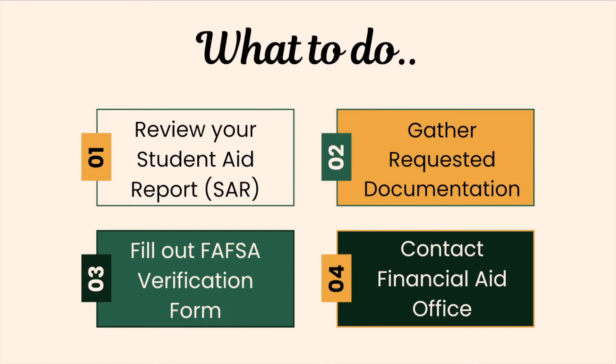After that, you'll have to fill out the FAFSA verification form. The colleges requiring verification will send you a FAFSA verification worksheet to complete. You will fill in all the requested information and not leave any sections blank. If a field doesn't apply to you, enter 0 or N/A as needed. Be sure to sign and date the FAFSA verification form before mailing it in.